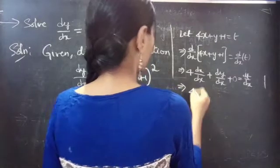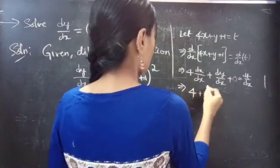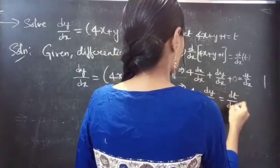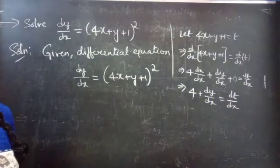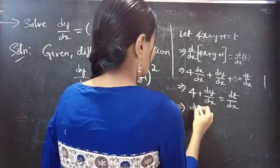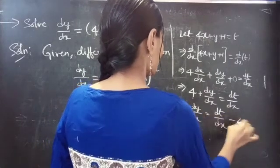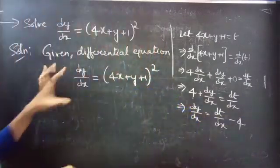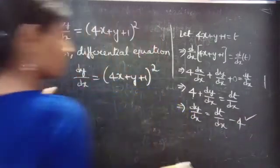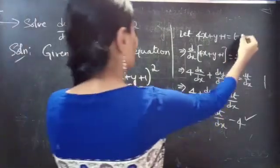So, we get 4 — since dx by dx is 1 — we get 4 plus dy by dx equals to dt by dx. From this, we get dy by dx equals to dt by dx minus 4.